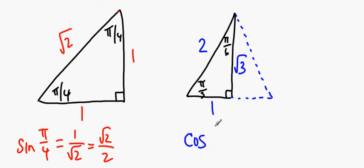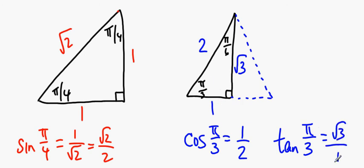So if I want to know what the cosine of π over 3 is, well, cosine of π over 3, that's the ratio of the adjacent side to the hypotenuse. That's 1 half. No need to rationalize anything. And then tangent of π over 3, well, that's the ratio of the opposite side to the adjacent side. That's radical 3 over 1 or just plain radical 3. Some people memorize things like SOH-CAH-TOA,